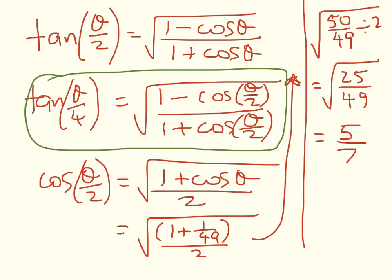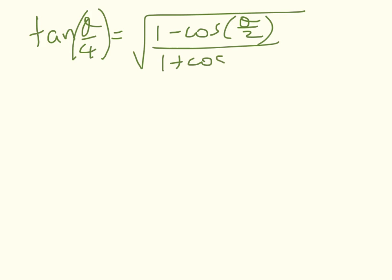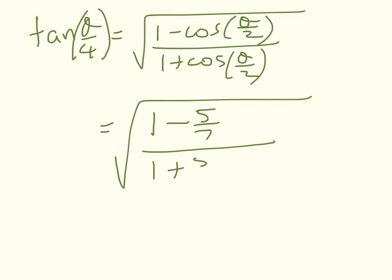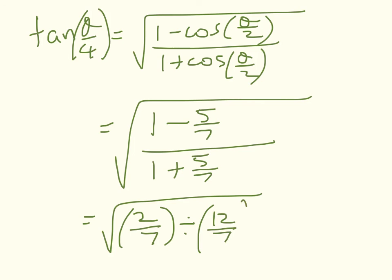Okay, so we've found cos(θ/2), and now we're just substituting. So tan(θ/4) is equal to the square root of (1 - cos(θ/2))/(1 + cos(θ/2)), which is equal to the square root of (1 - 5/7)/(1 + 5/7). And that equals the square root of (2/7)/(12/7), which equals the square root of 1/6 or 1/√6.